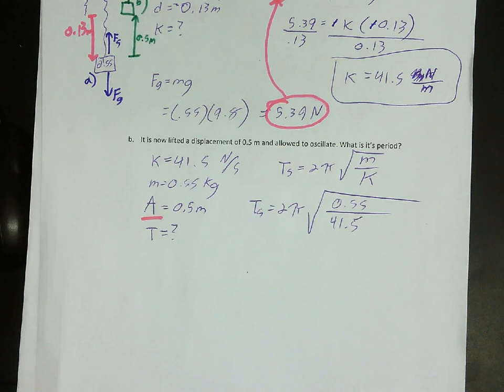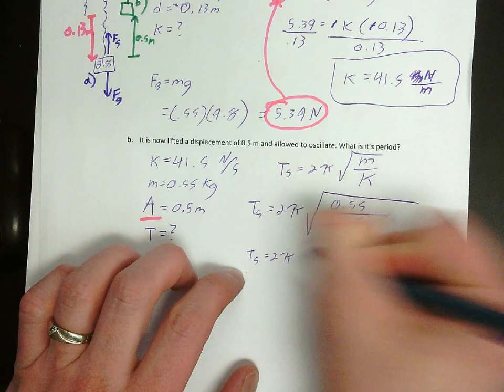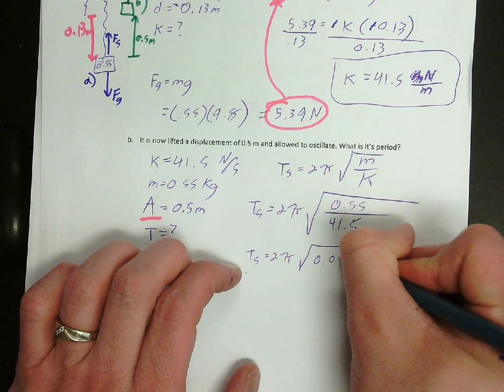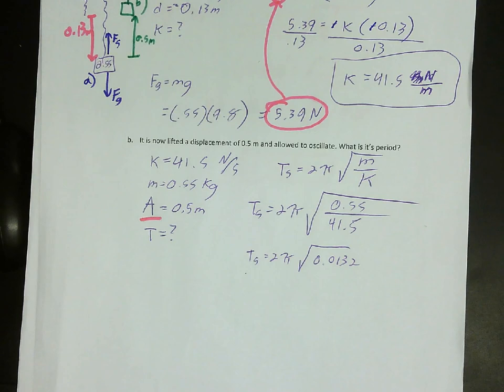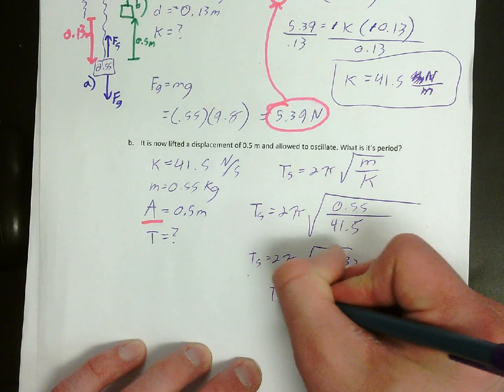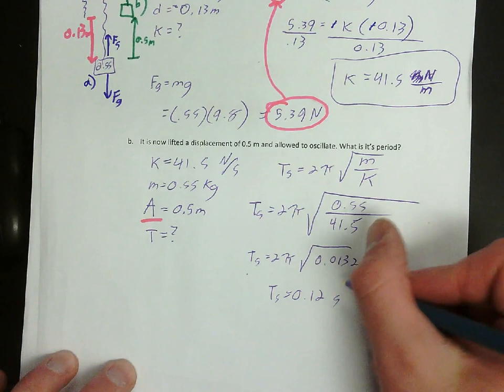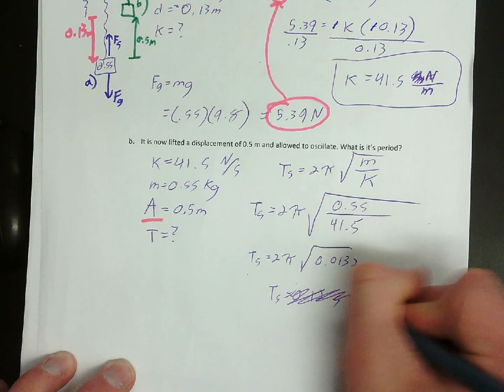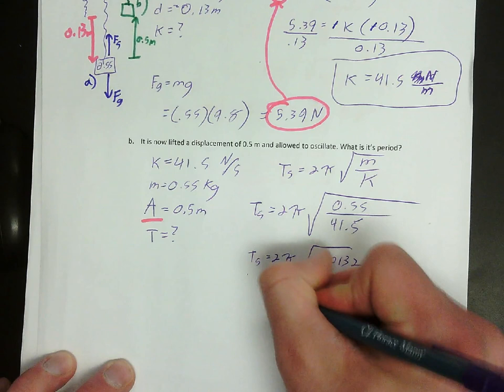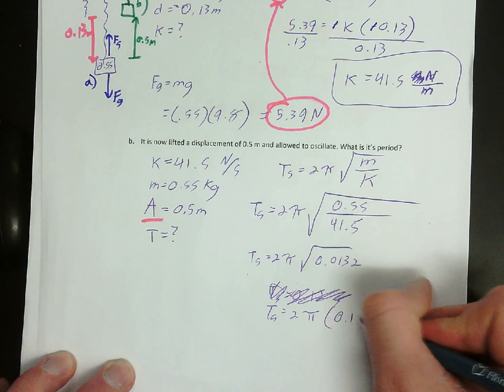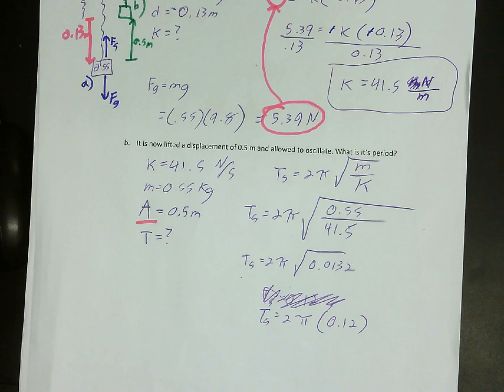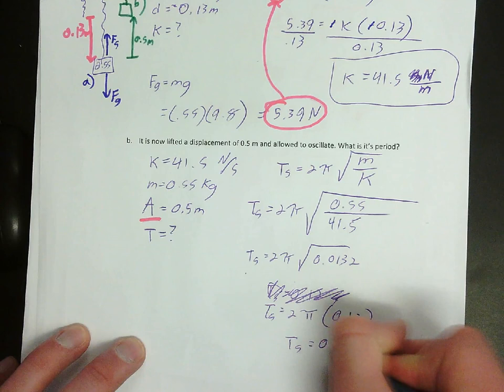So now, I just got to solve this out. So first thing I'm going to do is 0.55 divided by 41.5. When I do that, I get 0.0132. Square root that answer, and I get 0.12. So now you multiply that by 2, multiply by π. And that gives you a period of the spring of 0.72 seconds.